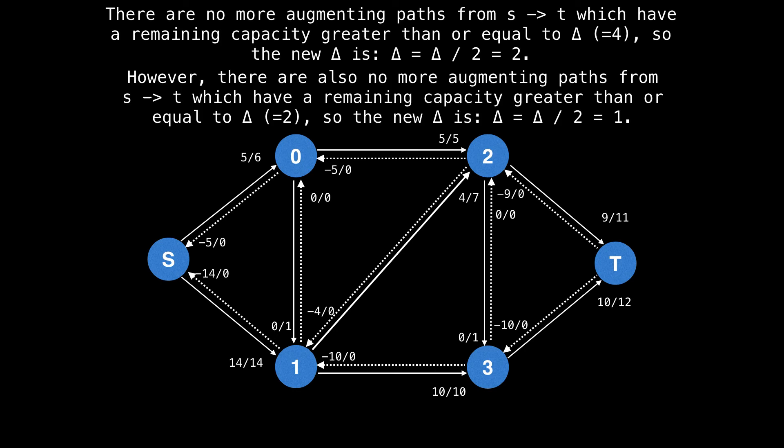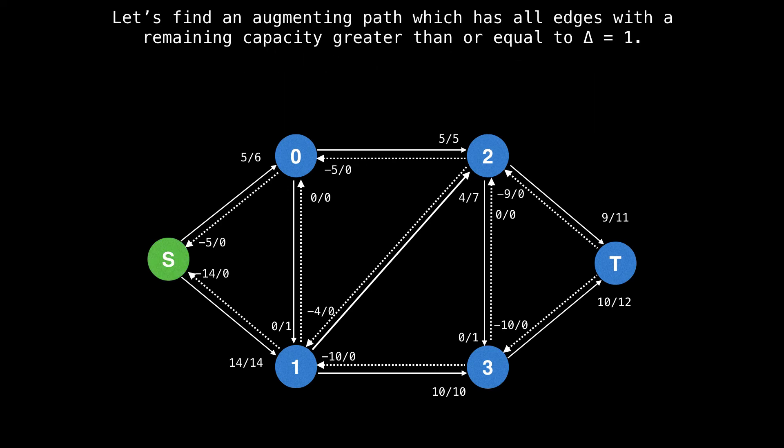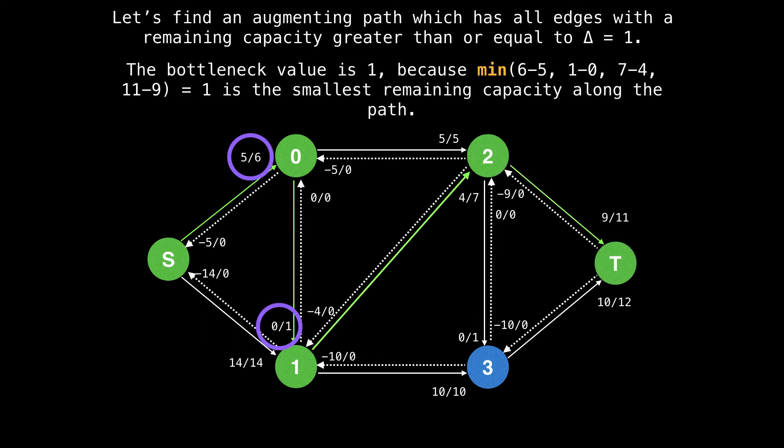I believe there's one remaining path we can take before the graph is fully saturated. Let's start at the source and find it. All right, now we found the path. And we can also find the bottleneck, which has a value of one. And now the last step is to augment the flow.